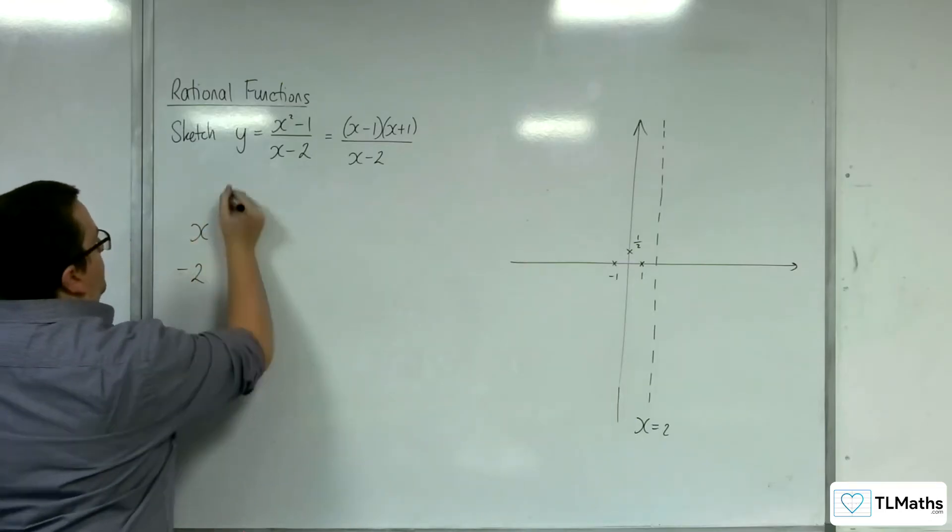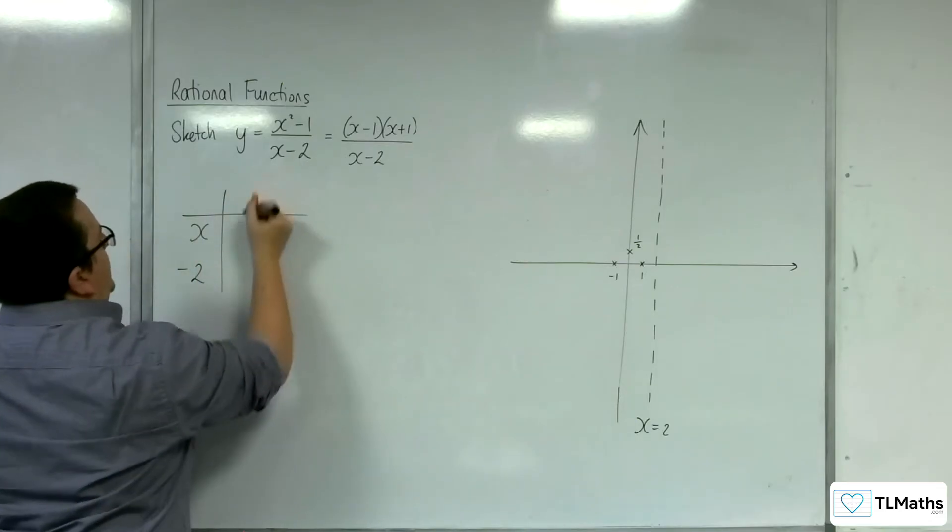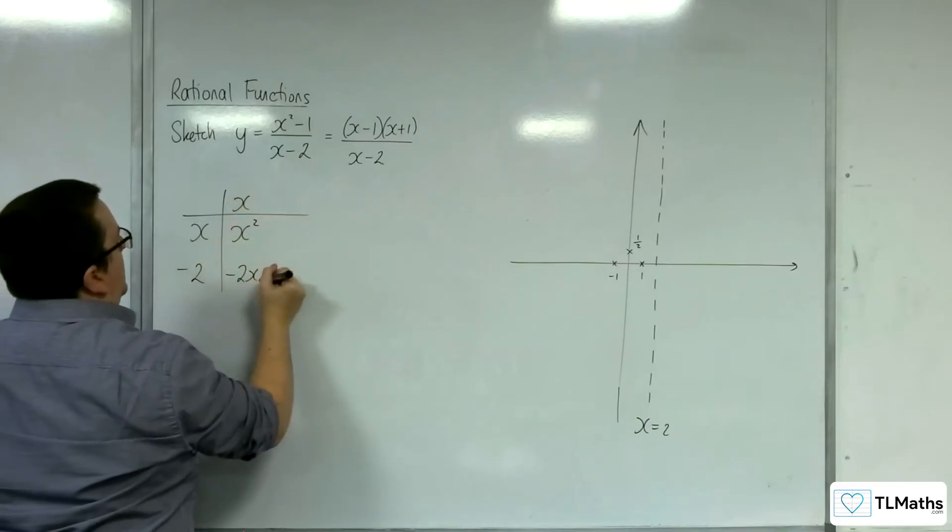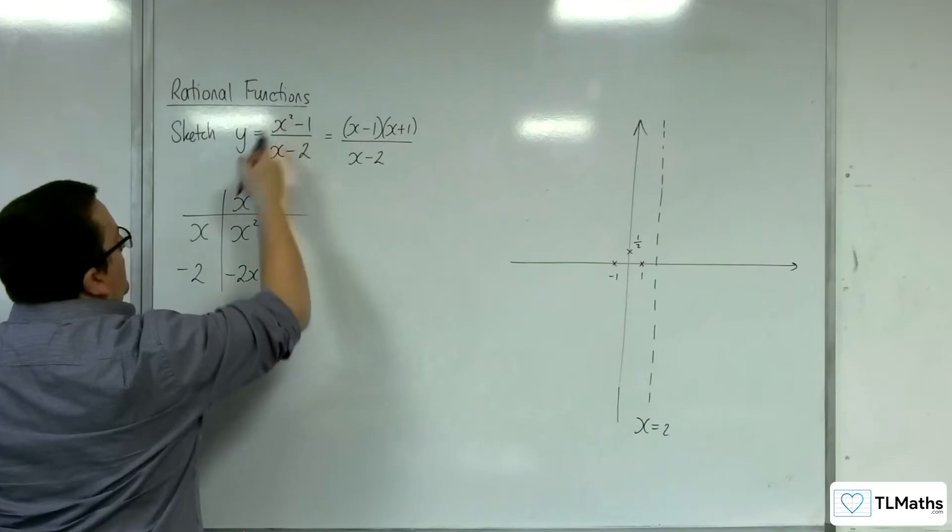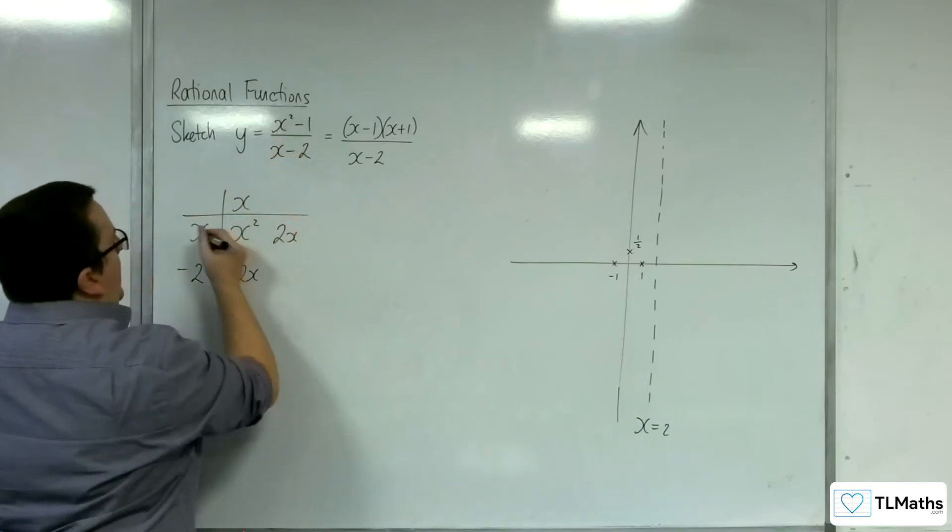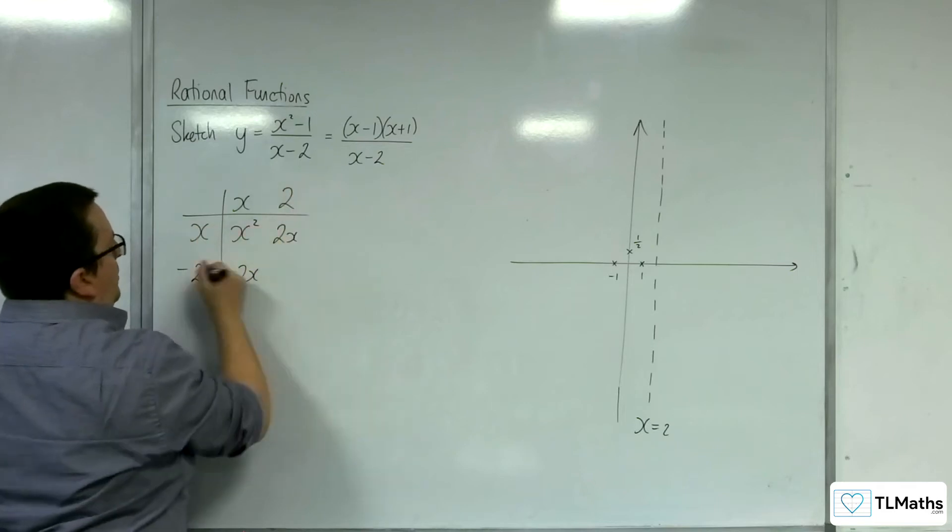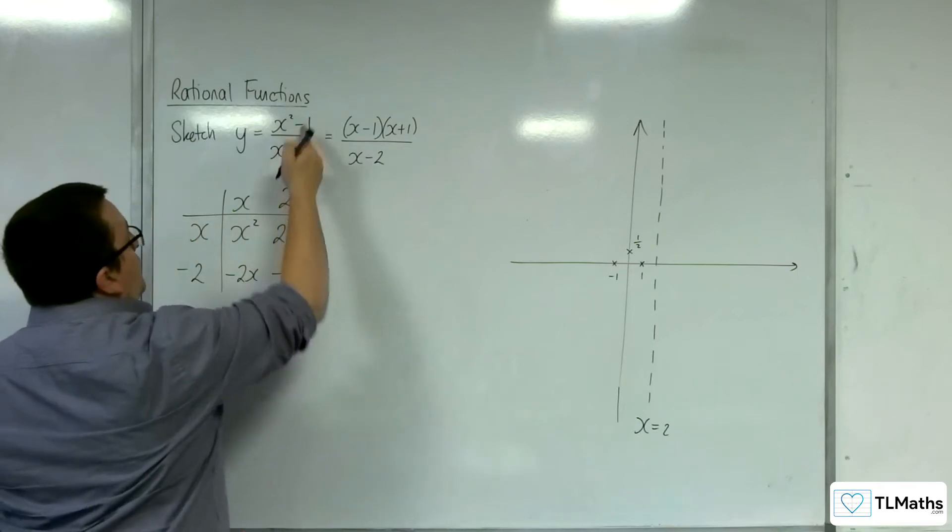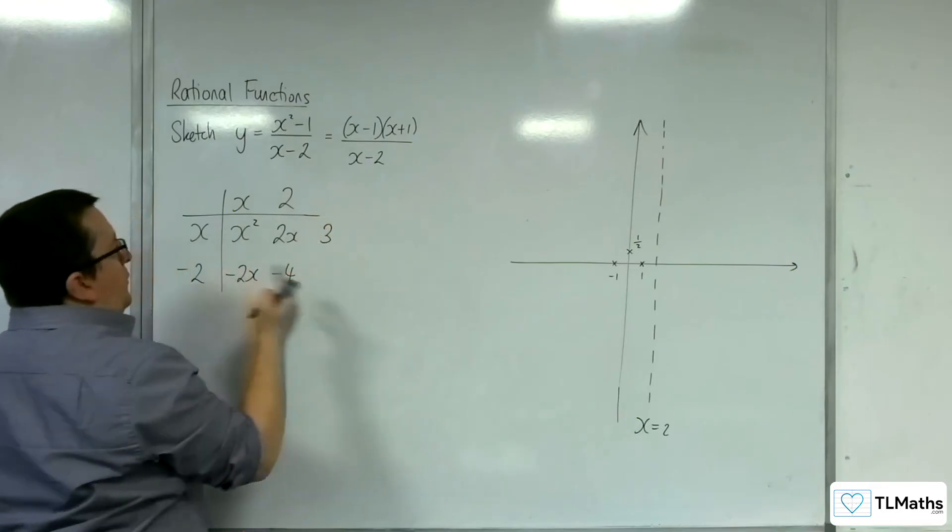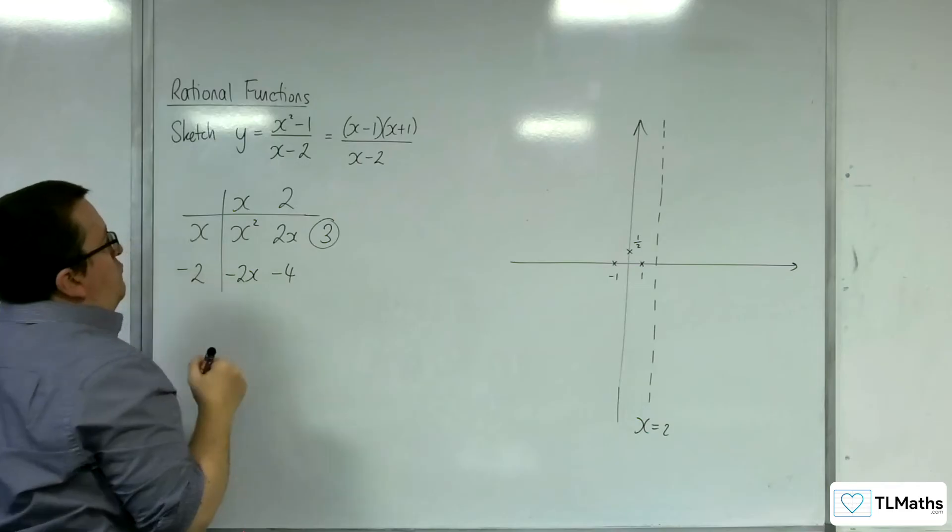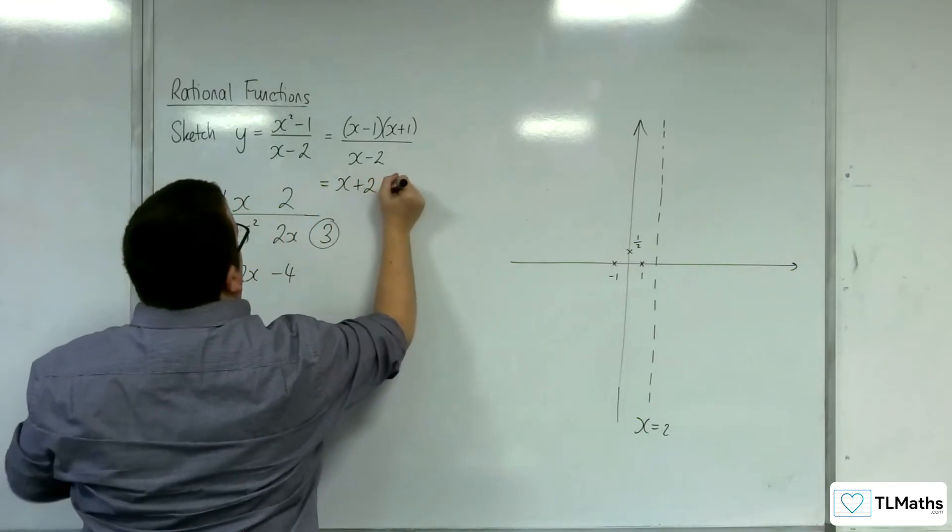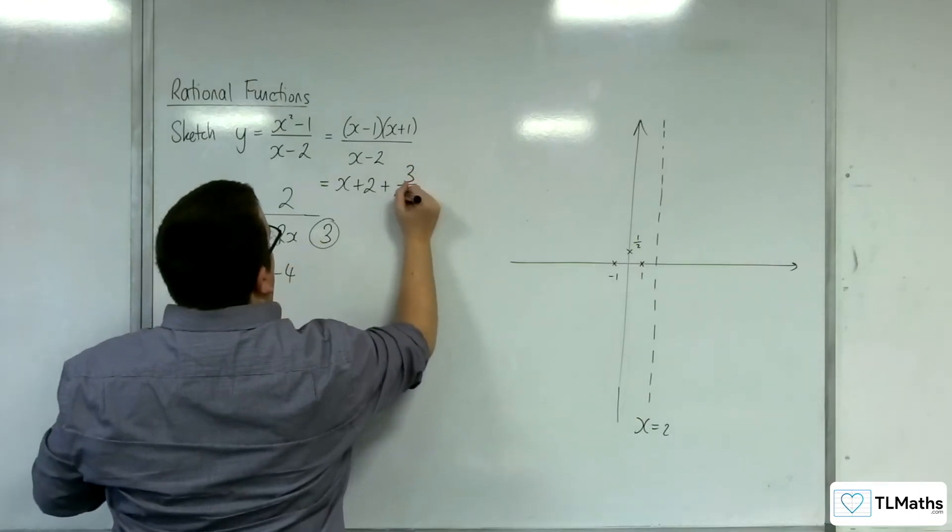So x take away 2. So I need the x squared. x and x squared go x. x times minus 2 is minus 2x. I don't have any something x's there, so I need to add on 2x to knock them out here. x and the 2x go 2. 2 lots of minus 2 is minus 4. I don't have minus 4, I've got minus 1, so I'm going to have to add on 3. So that's as far as I can go. So 3 is my remainder. So this is going to be equal to x plus 2 plus 3 over x minus 2.